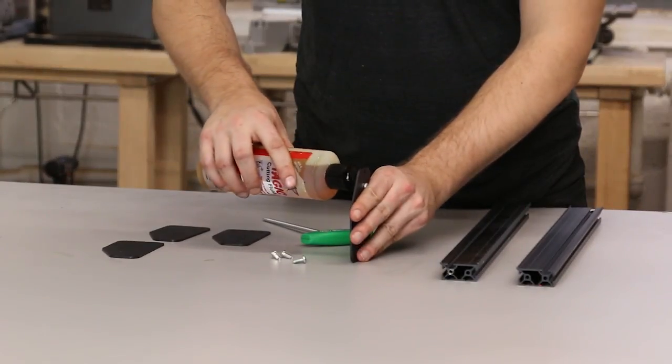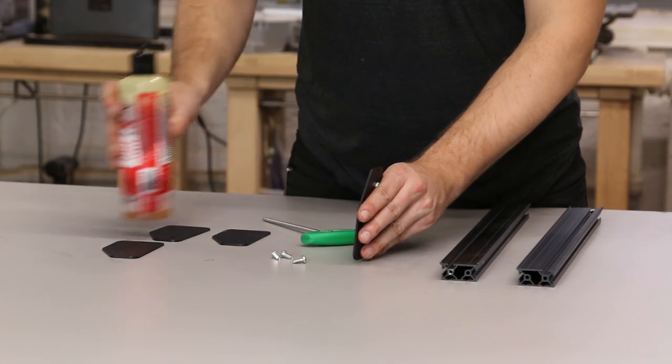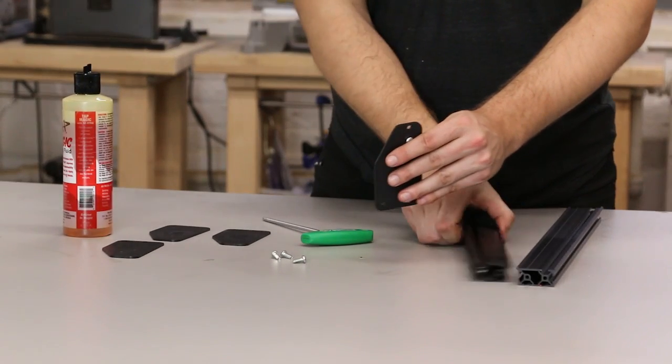Take note of the holes that I'm going to put the self-tapping screws through. You'll want to leave the top one open, that's for the belt clips later.